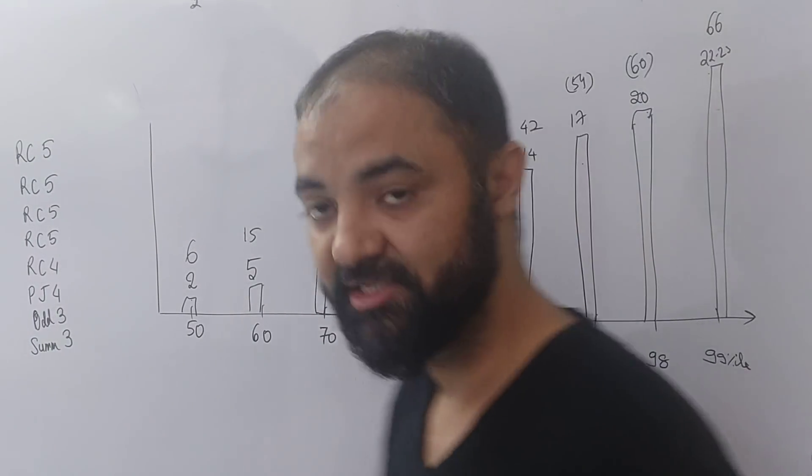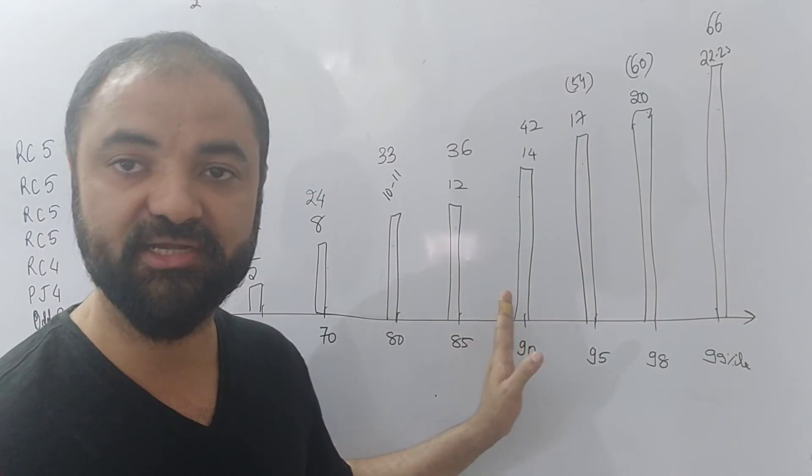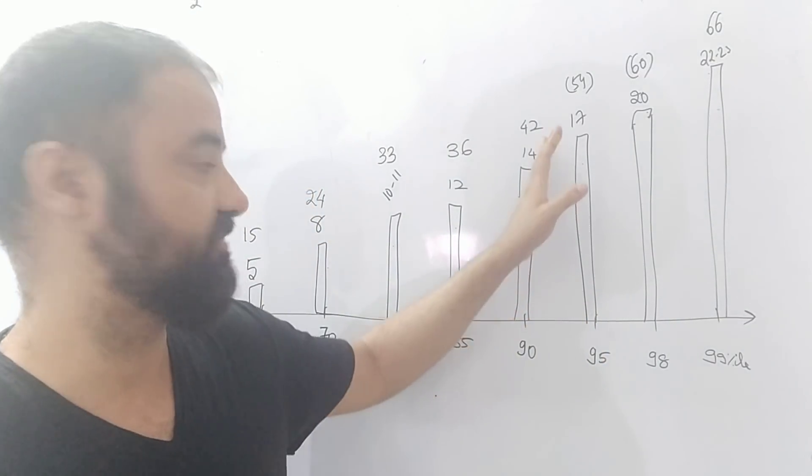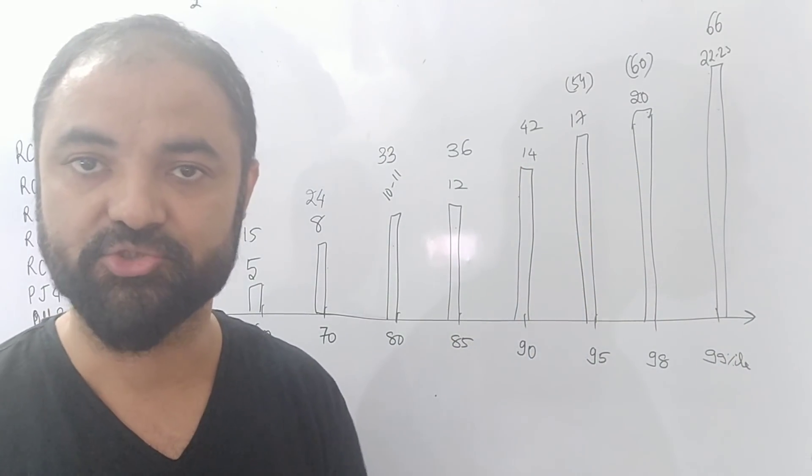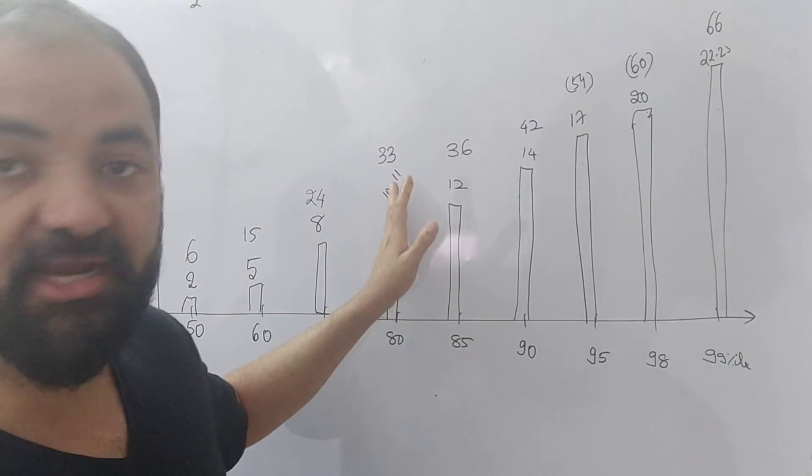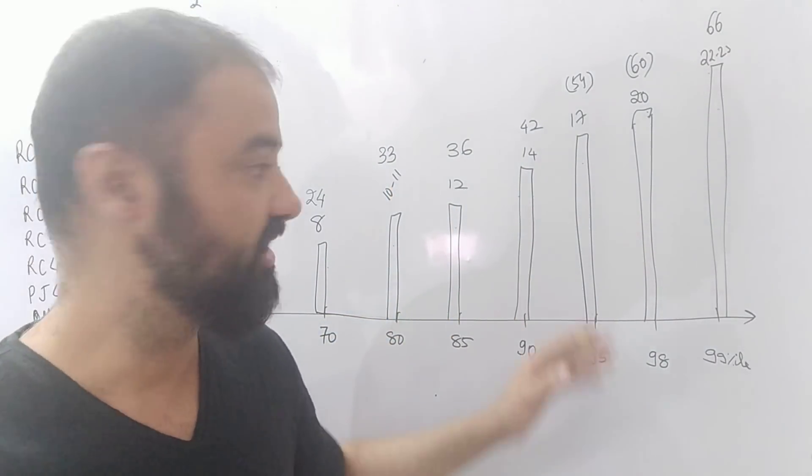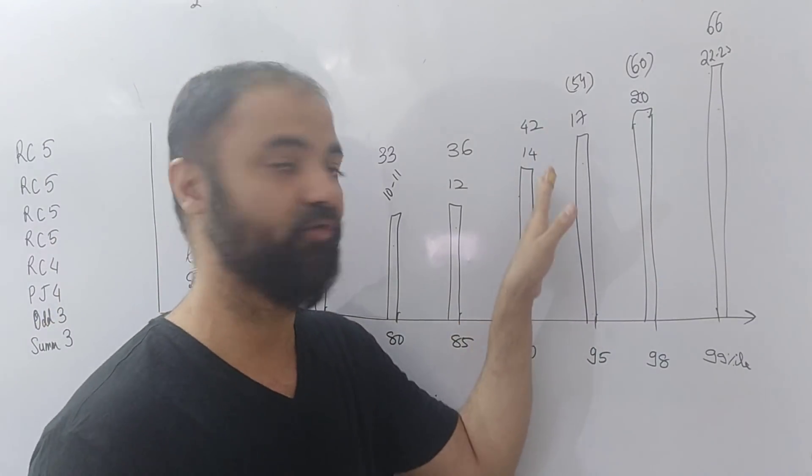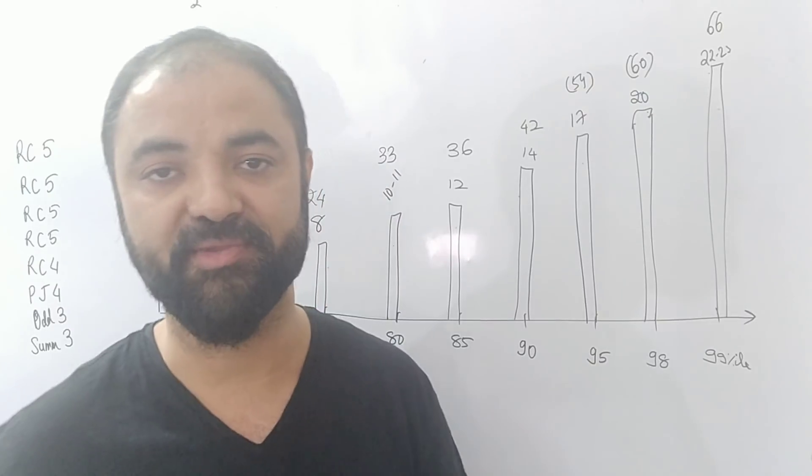And 99 percentile will be around 66, which is 22 to 23 questions correct, 63 to 69 marks. So this is the breakup. So all the major IIMs will give you a call at 90 percentile plus. So you can expect 42, 14-15 questions correct, you will get the IIM calls. So if you are scoring in this range, you can expect an IIM call at 80 percentile, 33 marks for 80 percentile for new IIMs, and for the major IIMs at 14 to 15 questions correct.